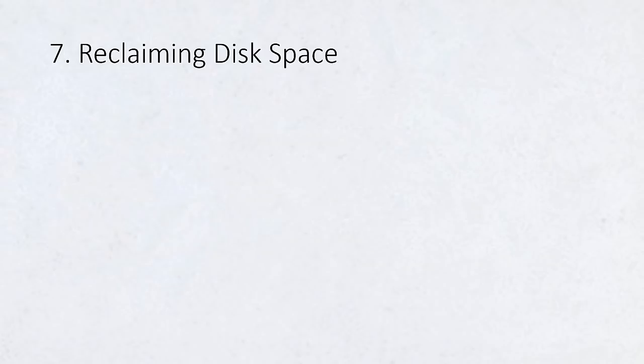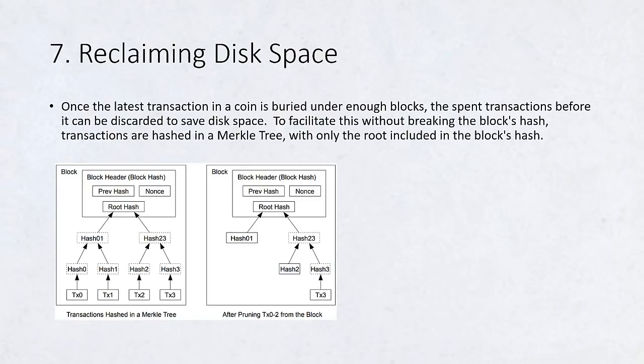Reclaiming Disk Space. Once the latest transaction in a coin is buried under enough blocks, the spent transactions before it can be discarded to save disk space. To facilitate this without breaking the block's hash, transactions are hashed in a Merkle tree, with only the root included in the block's hash. Old blocks can then be compacted by stubbing off branches of the tree. The interior hashes do not need to be stored.